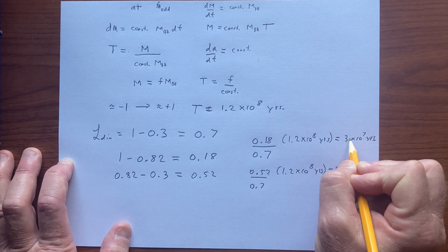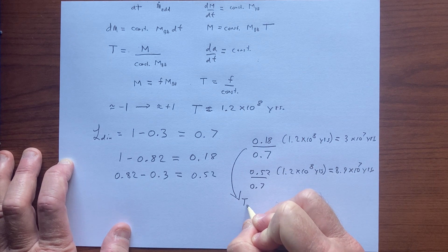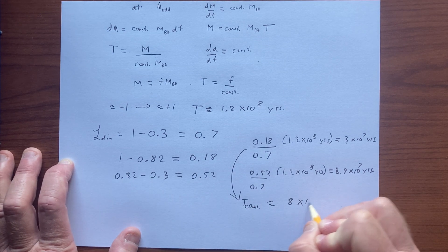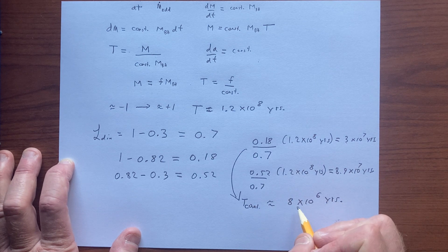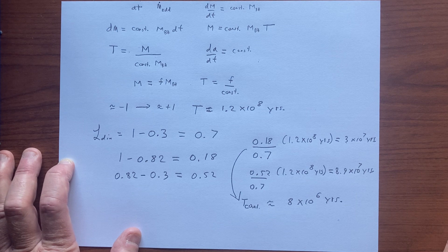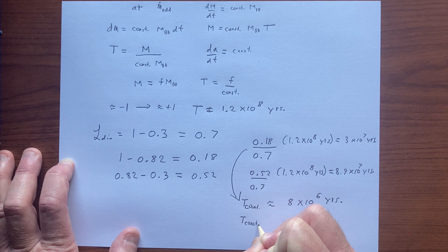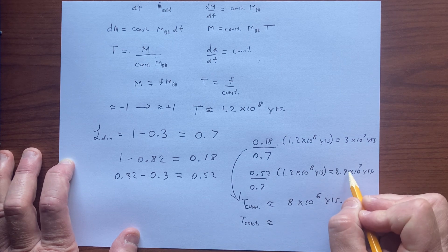It turns out that for counter-rotation, the timescale is about 8×10⁶ years. This is independent of the mass of the black hole — any black hole with the highest spin it can have, spinning down at the Eddington accretion rate, will take roughly 8×10⁶ years. The co-rotation timescale is whatever is left over — it will be greater, on the order of 1.1×10⁸ years.